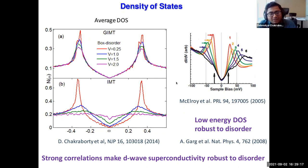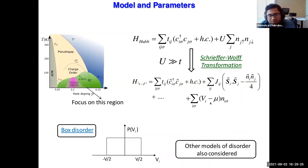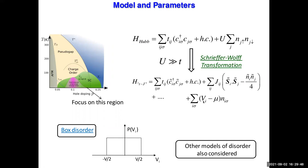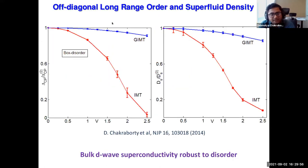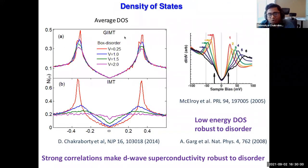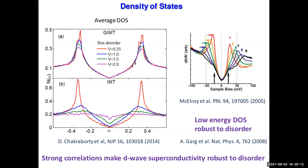The disorder in the model is completely uncorrelated. But interestingly, the Gutzwiller approximation generates an effective disorder that is actually correlated. So even though we put in uncorrelated disorder, after the full mean-field treatment in GIMT, the effective disorder seen by the electrons is correlated. The robustness of superconductivity to disorder is essentially a consequence of this effective correlatedness.